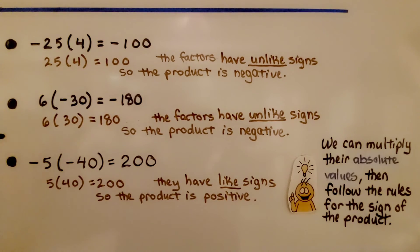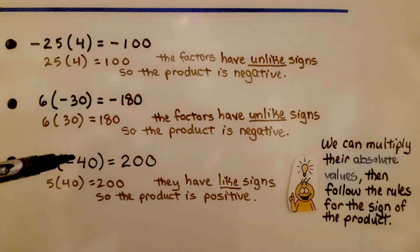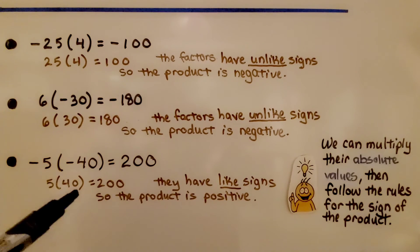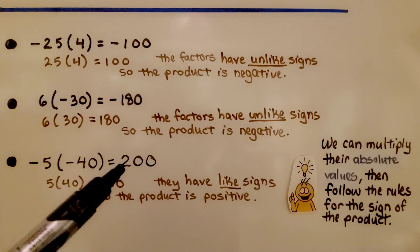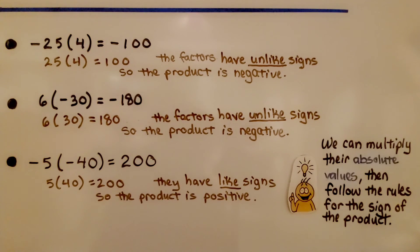Here we have negative 25 times positive 4 — unlike signs, so 25 times 4 is 100, giving us negative 100. Here we have positive 6 times negative 30 — unlike signs, so 6 times 30 is 180, giving us negative 180. Here we have negative 5 times negative 40 — like signs, so 5 times 40 is 200, giving us positive 200. We can multiply their absolute values, ignoring the signs, then follow the rules for the sign of the product.